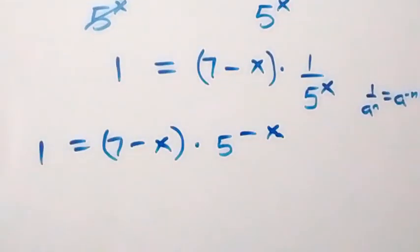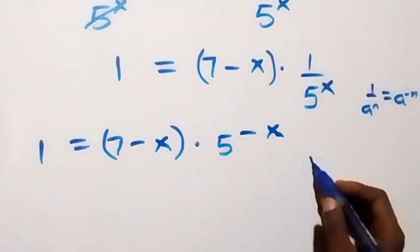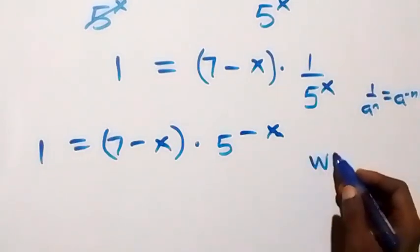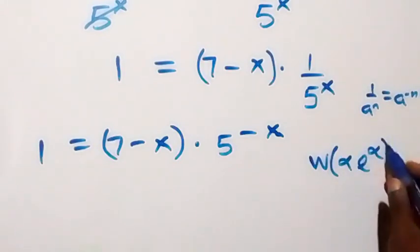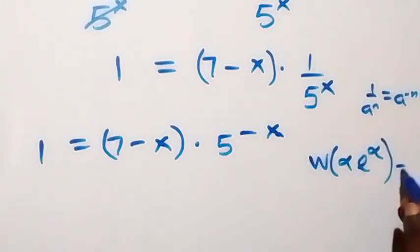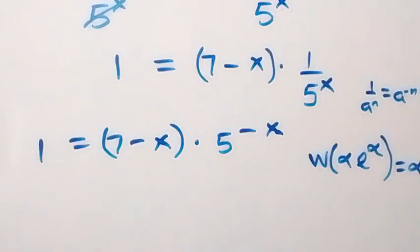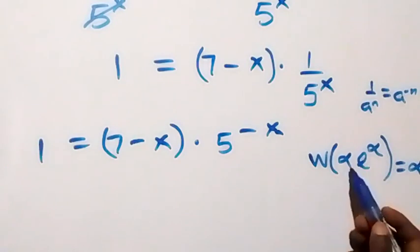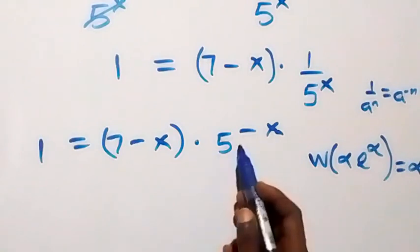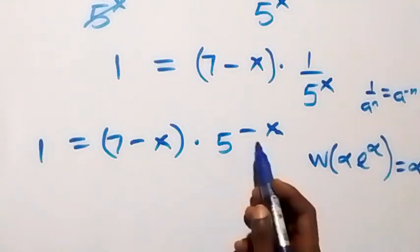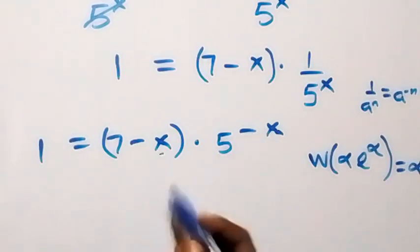We are intending to use the Lambert W function. When we have W(alpha · e^alpha), that equals alpha — that is, the power and the coefficient of the exponent will be the same. Now let's make the power of 5 here equal to 7 minus x.